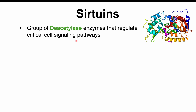Sirtuins are a group of deacetylase enzymes that regulate critical cell signaling pathways — meaning they remove acetyl groups. Acetyl groups are a chemical group that is attached to different types of proteins. We'll discuss some of those proteins later on.